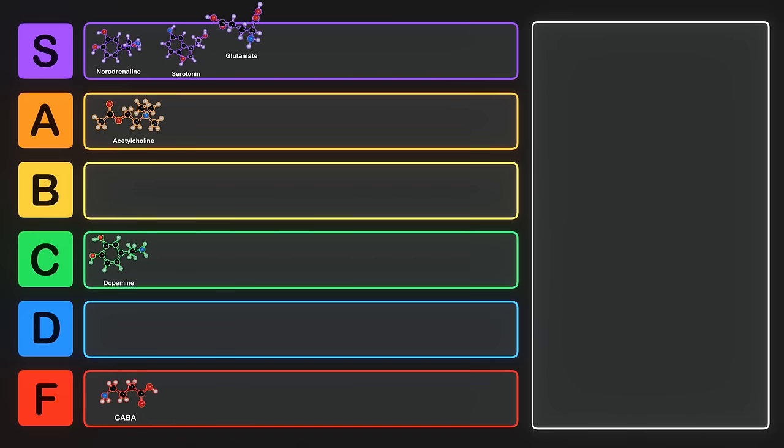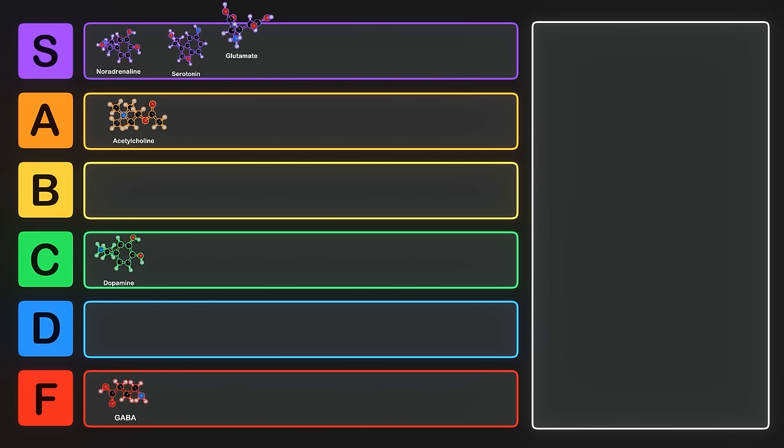In this video we delved into the fascinating world of neurotransmitters, exploring their diverse functions and the intricate biochemistry behind them. We examined some key neurotransmitters such as dopamine, noradrenaline, serotonin, acetylcholine, glutamate, and GABA, unraveling their roles within neurons and shedding light onto the mechanisms by which they operate. We hope this exploration has provided you with a deeper understanding of the fundamental role neurotransmitters play in shaping our thoughts, emotions, and actions. If you enjoyed this video, it wouldn't hurt to share it with someone else who might enjoy it. Thanks for watching, and I hope you have a great day.